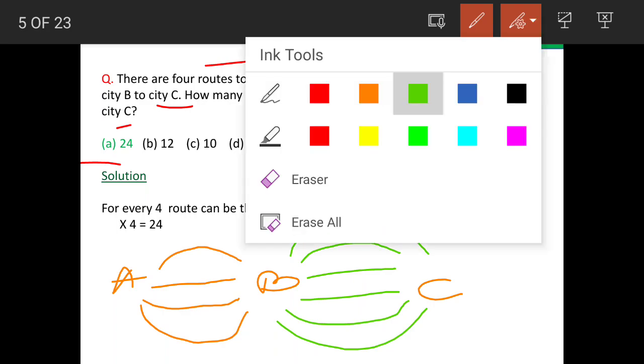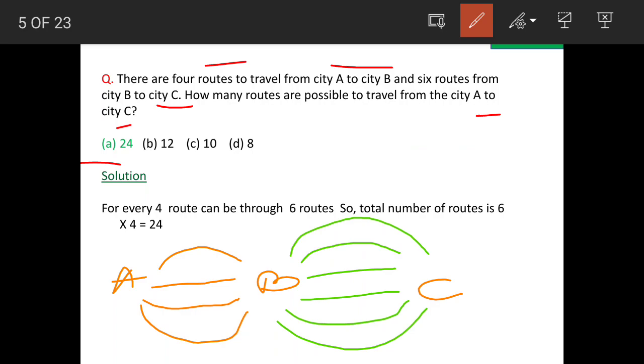So, in this manner, how will a person travel? Let us say from A to B, he takes this route, the top one, he comes to B. And from B, he has now 6 options to reach C. He can take this route or this route or this route, this route, this route or this route.